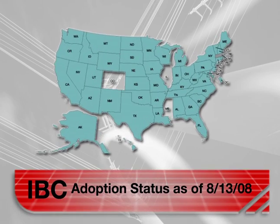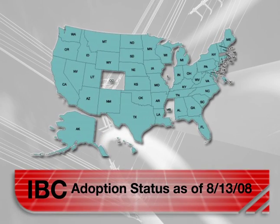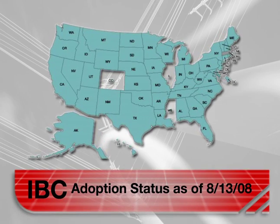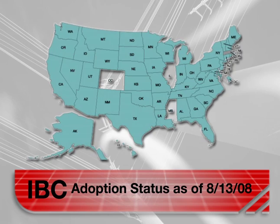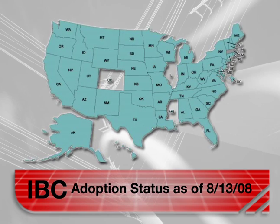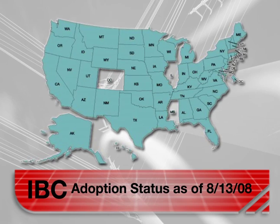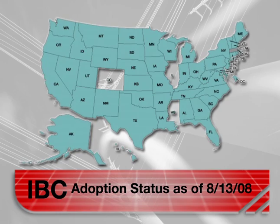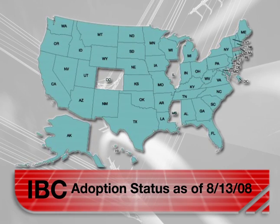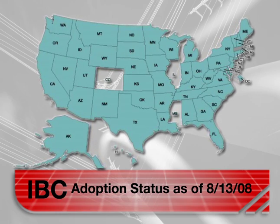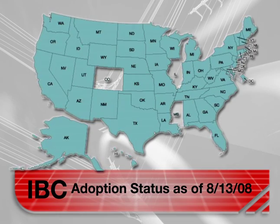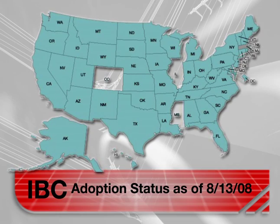The IBC is the model building code for the United States. It combines a number of regional codes. Critical equipment is considered as part of a building, so it has to meet the same requirements for withstanding both seismic loads and wind loads while continuing to operate.